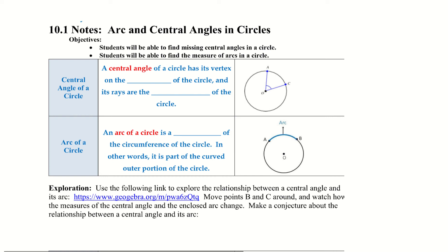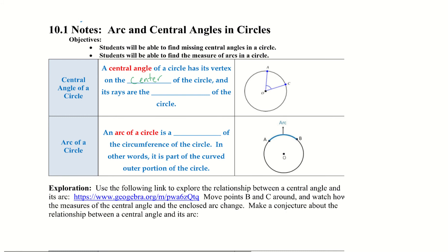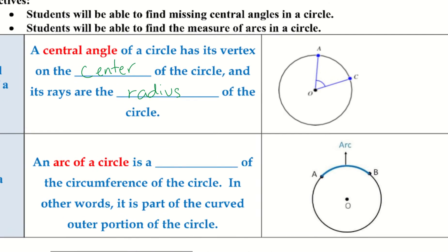First, the central angle of a circle. A central angle of a circle has a vertex on the center of the circle and its rays are the radius of the circle. We can see that this angle is in the center — the vertex is always going to be on the center for a central angle, and then it goes all the way to the edge, which is a radius of the circle.